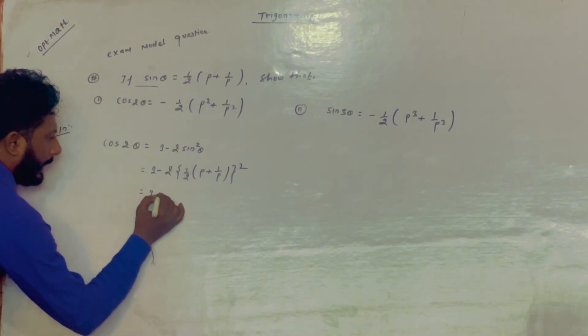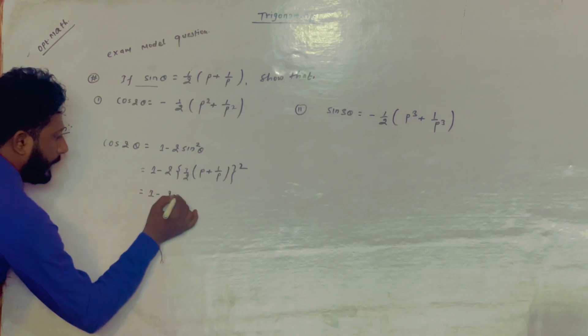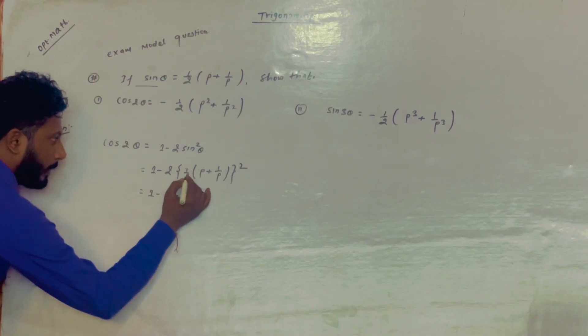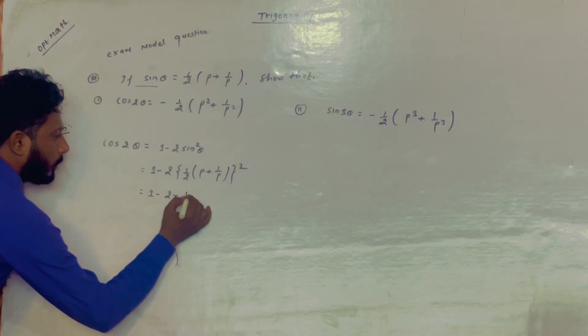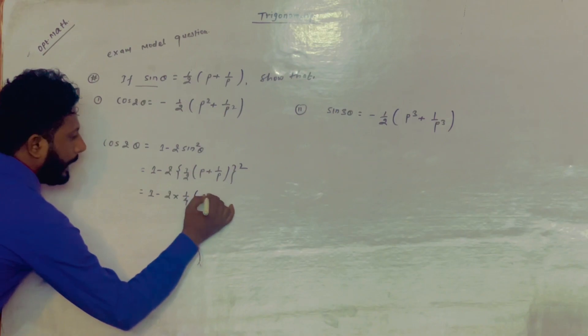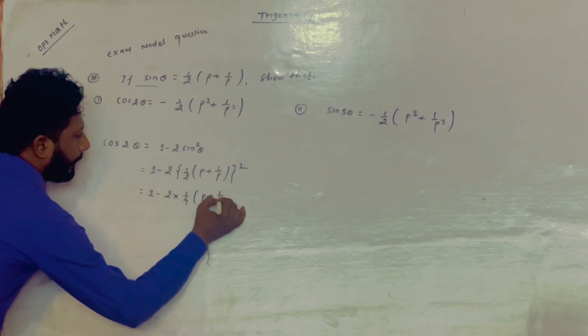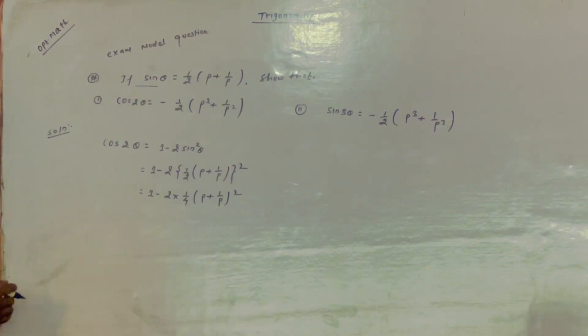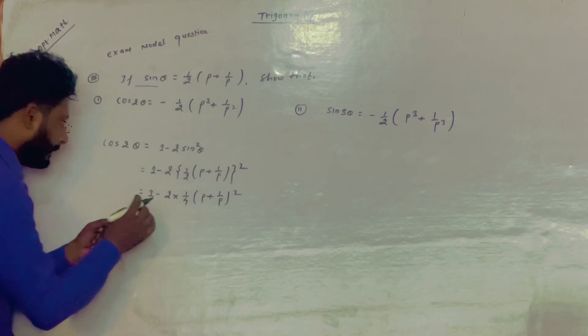So 1 minus 2 into — here we go, separating — 1 by 2 gives 1 by 4, then p plus 1 by p whole square.